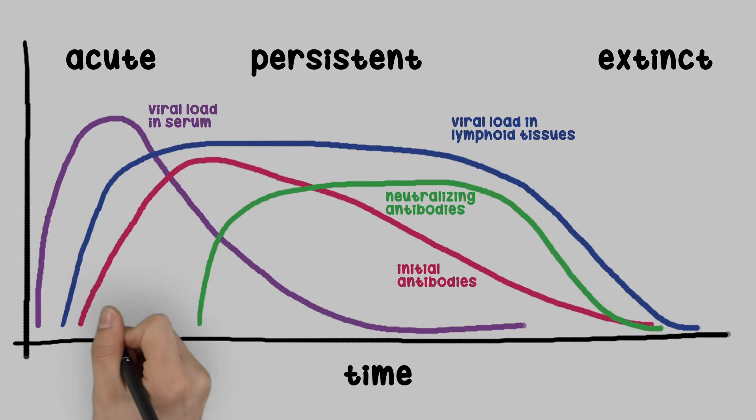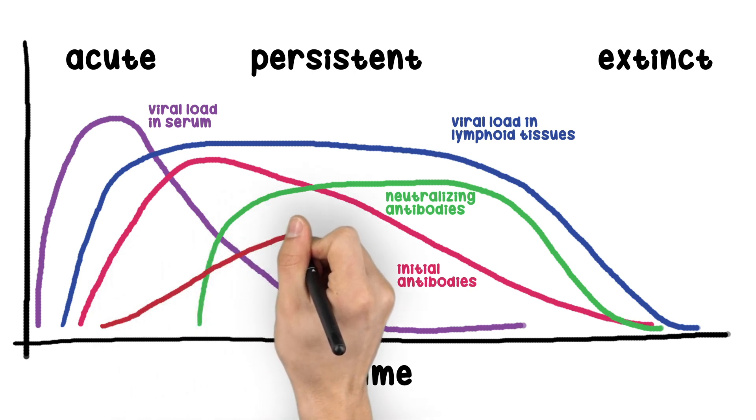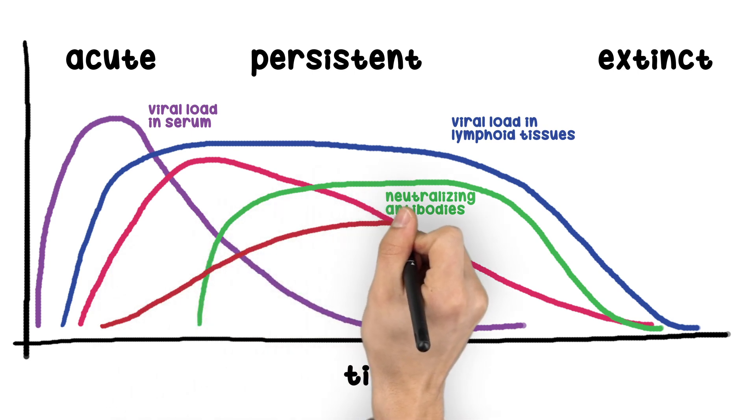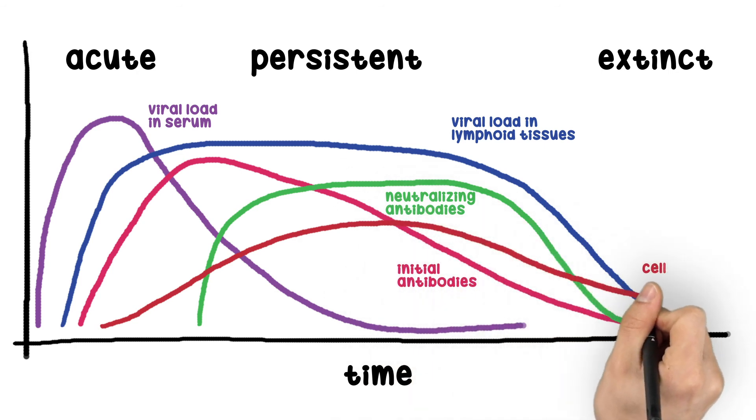Cellular immunity, or the T cell response, appears to be significant for effective immunity. This arm of the immune system takes at least two weeks to develop. However, once the cellular immune response is developed, it seems to be important for the clearance of the virus from the animal.